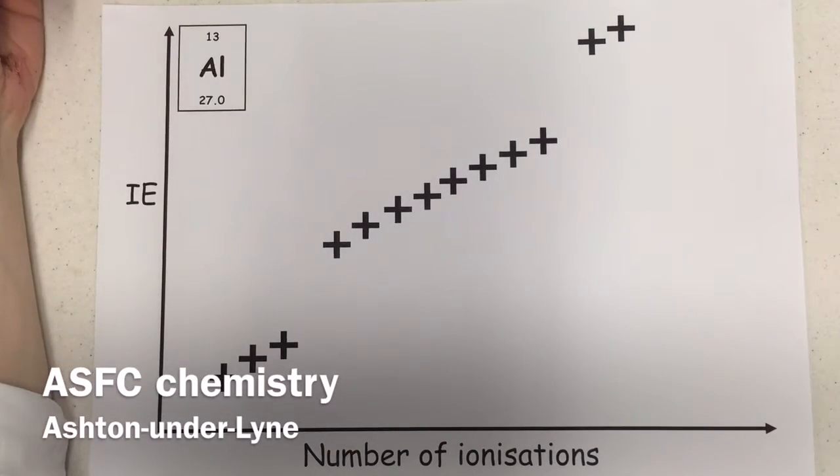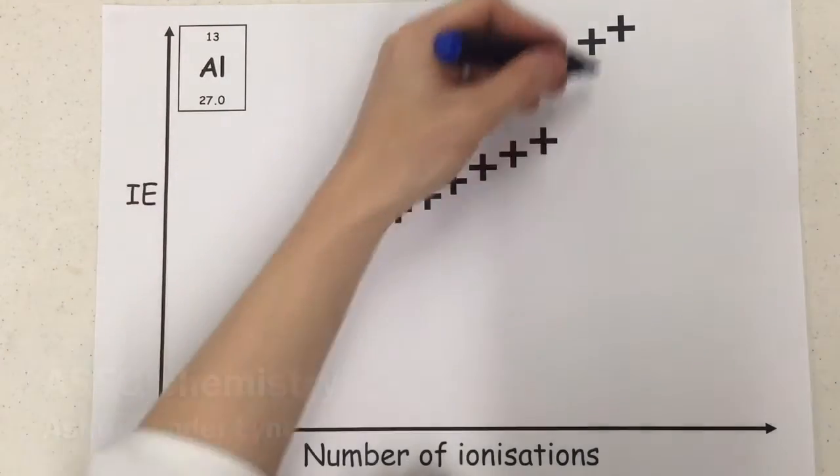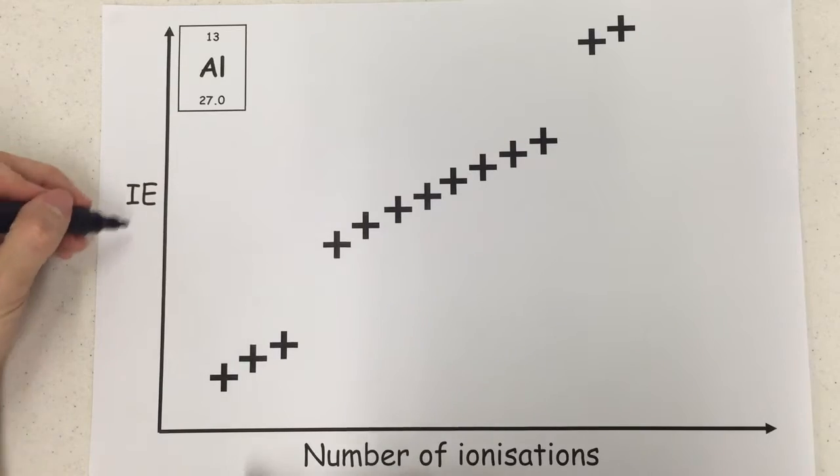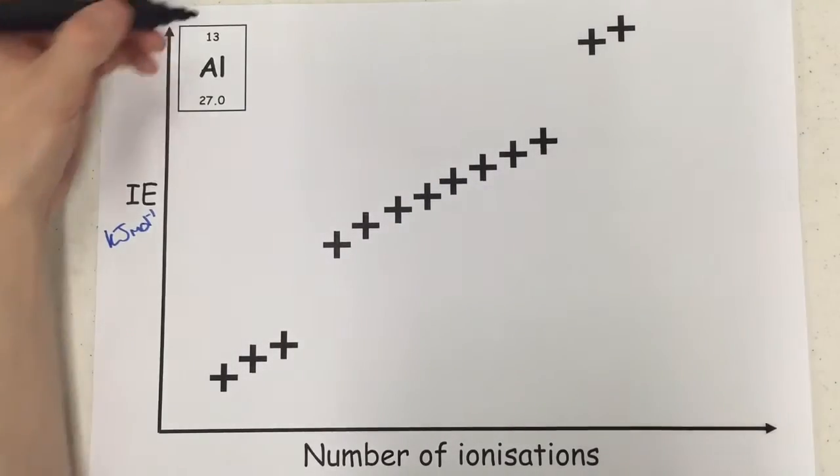Right, so let's go through successive ionization energies. Now for successive ionization energies, I'm going to use the example here of aluminum, and this is a graph of the positioning of ionization energy, which remember would be kilojoules per mole, all the different ionization energy values for aluminum, one after another.